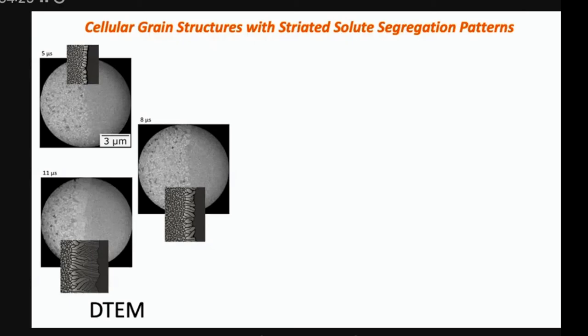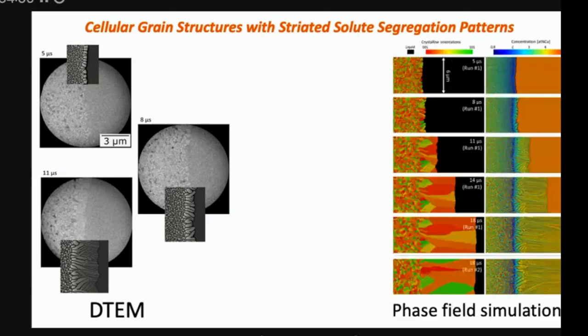It's more clearly shown in the phase field simulation than it is in the experiment. But what's interesting is, and more important is that at some point, the DTEM shows kind of almost like a milky white flat interface just following out. And the simulations kind of show similarly that at the top all these cellular structures have merged to form almost what appears to be a continuous front with very fine striations in it.